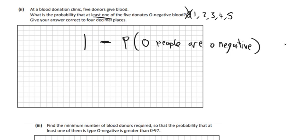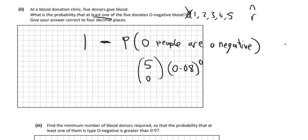So the probability that zero people are O-: you can just use the formula. So you can just use 5 choose 0 for zero people. And then it's still 0.08 to the power of zero, because R is zero here. Remember the formula is N choose R, P to the power of R, Q to the power of N minus R. So Q comes next, so it'll be 0.92, and it'll be 5 take away zero, which is 5.